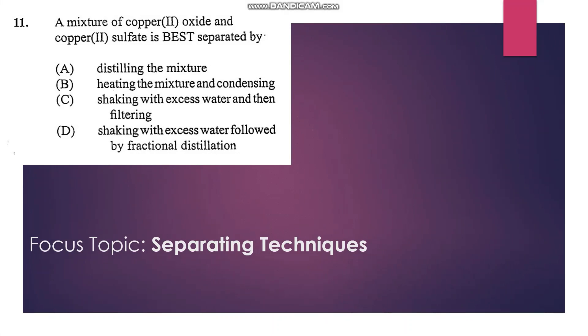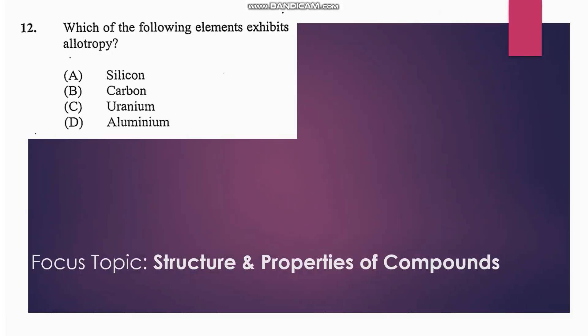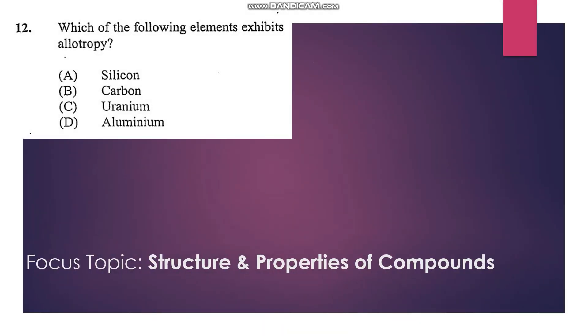Number 11: a mixture of copper(II) oxide and copper(II) sulfate is best separated by... Now insoluble salts can be separated from soluble salts by mixing in excess water followed by filtration. We know that copper(II) sulfate is soluble in water but not copper(II) oxide, and therefore C is our answer.